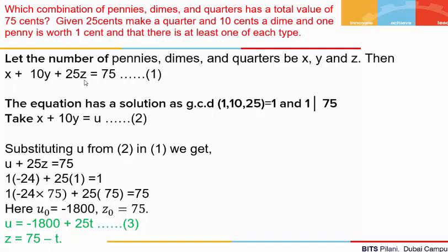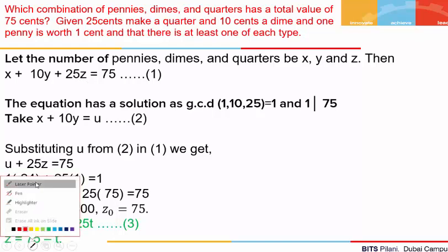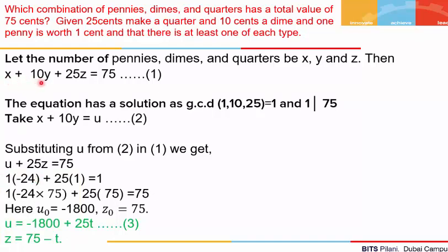If we add all of them, it should add up to 75 cents. This is a linear Diophantine equation in three variables x, y, z. Such an equation has a solution if the GCD of the coefficients — here the coefficients are 1, 10 and 25 — their GCD is 1, and this divides the right-hand side 75. So the solution exists. You can refer to one of my previous videos where such linear Diophantine equations have been solved.